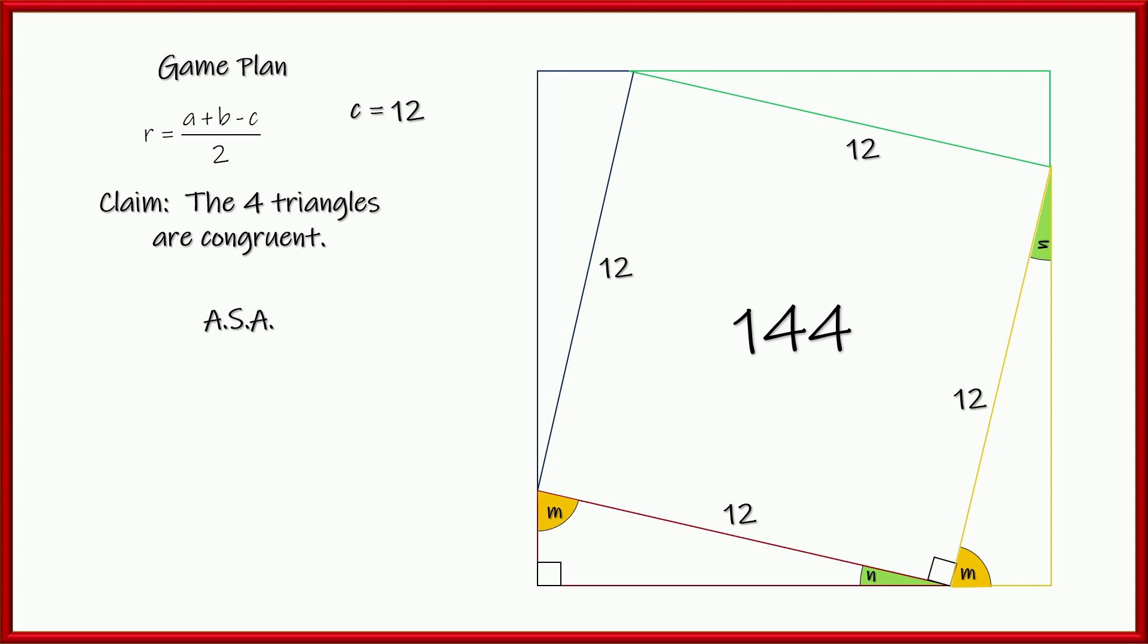Well, we already said that the hypotenuse is 12, and that's 12 all the way around. So, pretty easy to grab, angle-side-angle, to show that these triangles are all congruent.